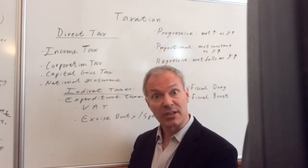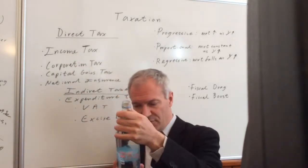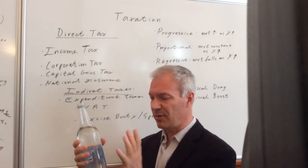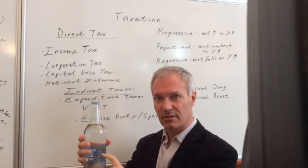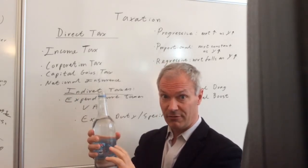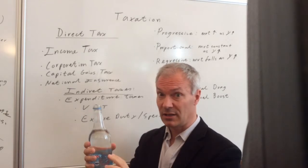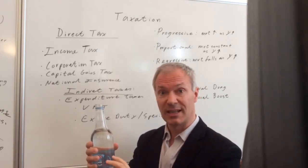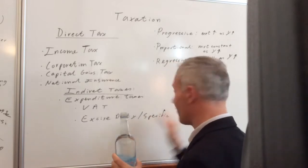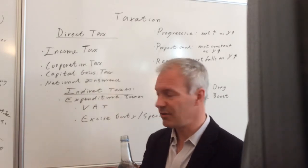Another concept found in some textbooks is fiscal boost. Imagine this bottle is gin and we pay £5 for it, with £2.50 in tax on that. Over time, say inflation pushes the price to £7, but the tax on the gin is still £2.50. The government is losing out on tax revenue, and we're gaining because in real terms the tax we're paying on the gin is becoming less — it's becoming a proportionally smaller share of the price. This is known as a fiscal boost, because it's a boost to the consumer, while the government loses out on tax revenue.